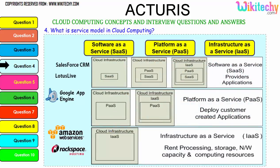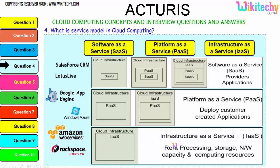Further explaining the models: Software as a Service includes the cloud infrastructure, software placed in the operating system, which is placed in the infrastructure. For Platform as a Service, the platform OS is given, placed in your server — you can put any application or software you want. For Infrastructure as a Service, a server is given and you can put whatever OS and applications you want. Examples for SaaS include Lotus Live and Salesforce CRM; for PaaS, Windows Azure and Google App Engine; for IaaS, Amazon Web Services and Rackspace Hosting.